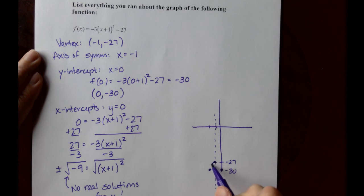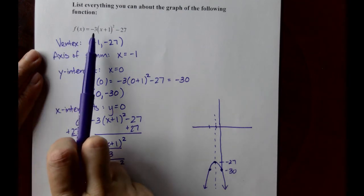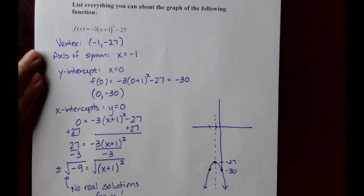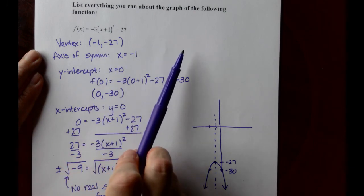And the parabola would open downward. According to our original equation, the parabola should open downward because the a value is negative 3. That should actually be part of our analysis.